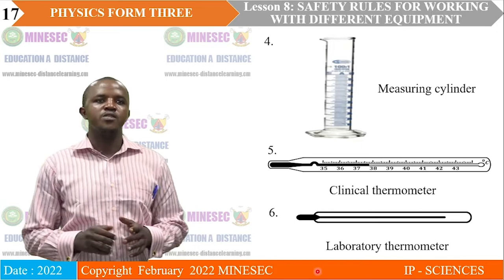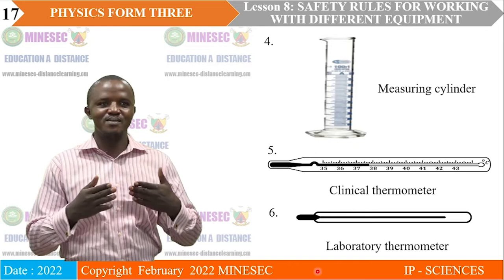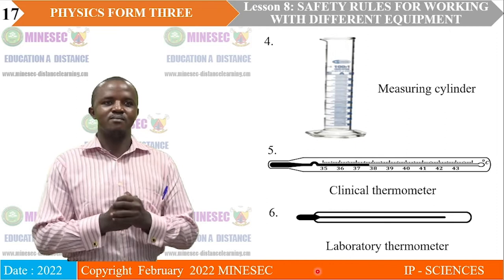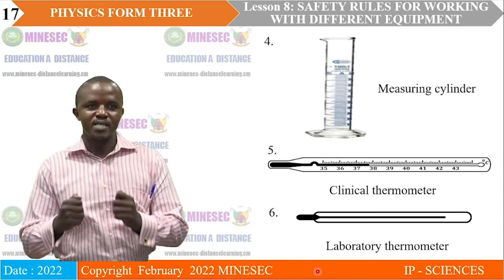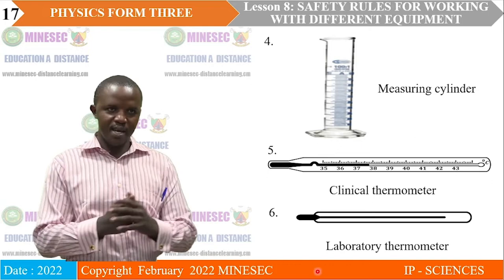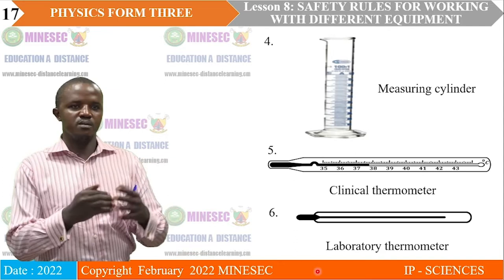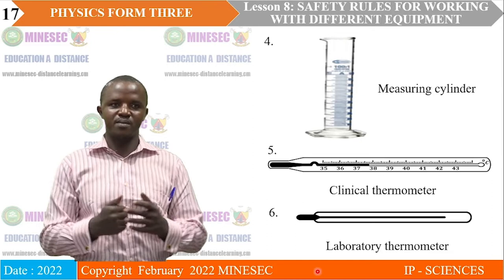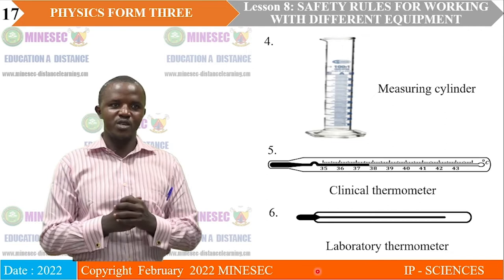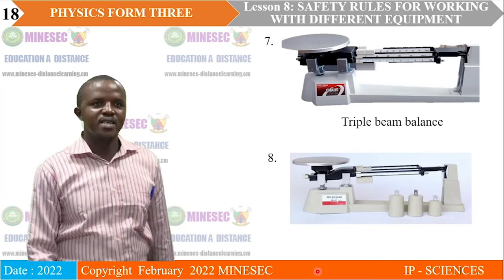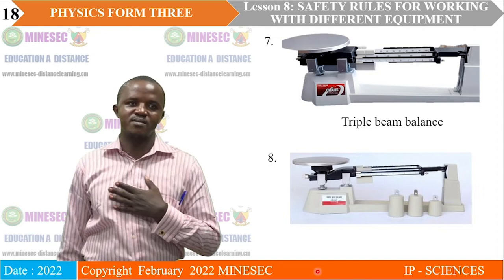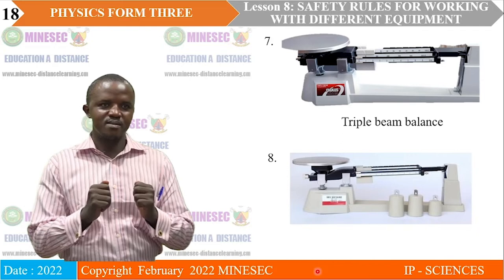The fourth is a measuring cylinder. Number five is a clinical thermometer. We call it a measuring cylinder because it is a cylinder and it is used to measure the volume of liquids. The clinical thermometer is what we use in our homes when we are feeling hot to know whether we are sick or not. We also have the normal laboratory thermometer used in the laboratory to carry out our experiments. Number seven is a triple-beam balance, and number eight is a double-beam balance.